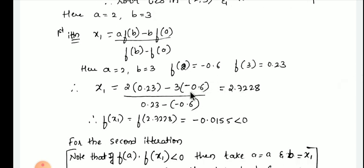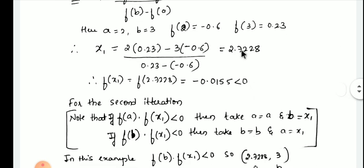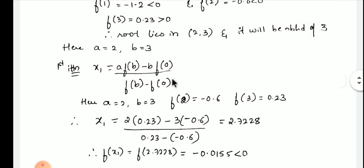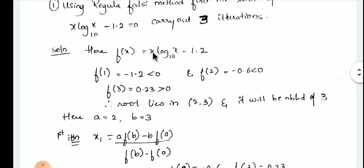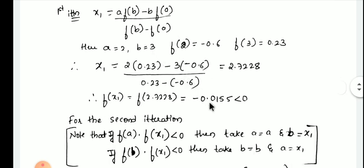Substituting in the formula — a·f(b) minus b·f(a), divided by f(b) minus f(a) — and simplifying, you get the answer x1 = 2.7228. Now find f(x1), that is f(2.7228), by replacing x with 2.7228 in the equation. Simplified, you get minus 0.0155, which is less than 0.